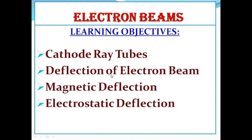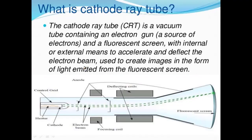Firstly we are going to talk about the cathode ray tube, so let's open page 309 from your textbook. The cathode ray tube is a vacuum tube containing an electron gun, which is a source of electrons, and a fluorescent screen with internal or external means to accelerate and deflect the electron beam, used to create images in the form of light emitted from the fluorescent screen. You can see here the beam of electrons being passed through, and this is the fluorescent screen where they create an image. This is the focusing coil, deflecting coils, cathode, anode, and heater.